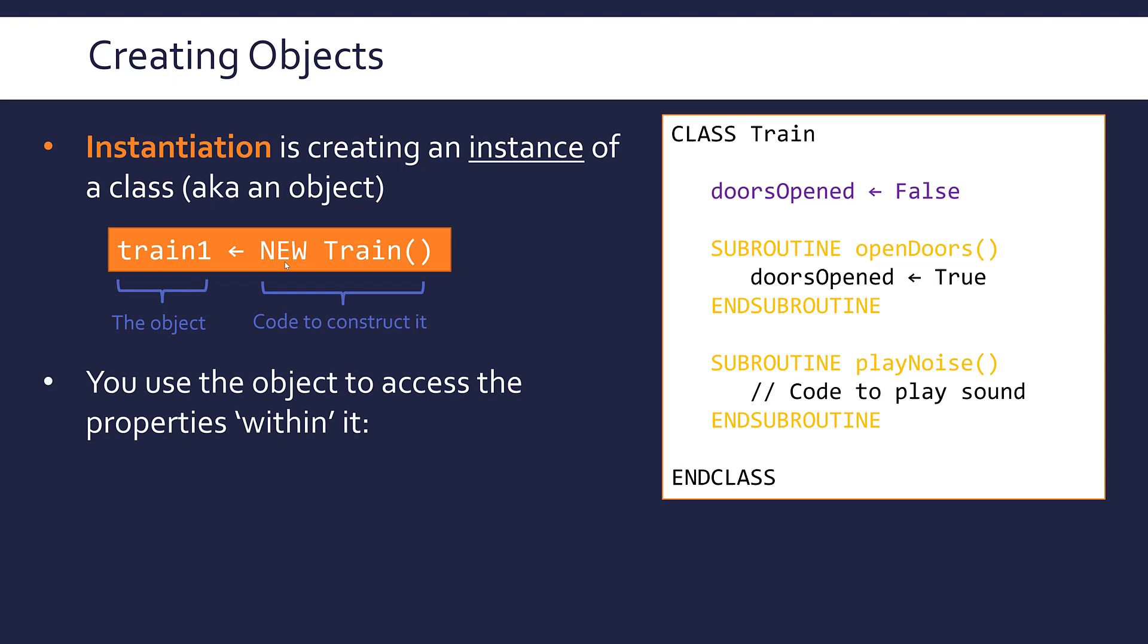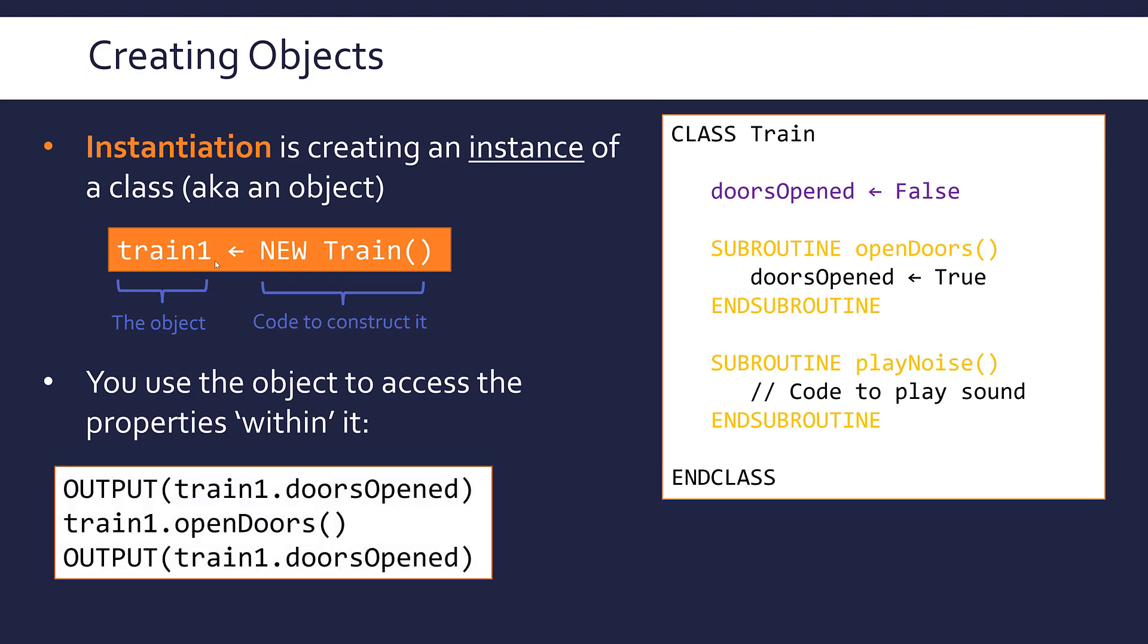Once we have the object instantiated, we can actually use this object name to access the properties held inside it. In most languages, if you just try to print or output train1 as an object, you would see nothing useful. Instead, you've got to use it. Usually this means we put the object name, followed by a dot, followed by either our field name or the method name. Once I've instantiated it, if I output train1.doorsOpened, this should print false because doorsOpened is set to false inside my class.